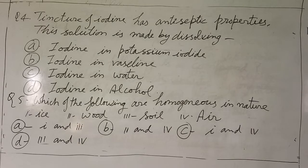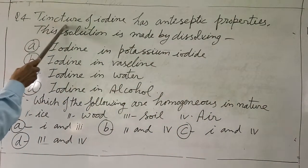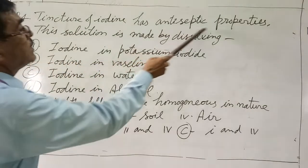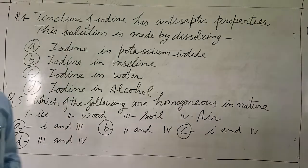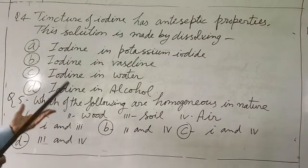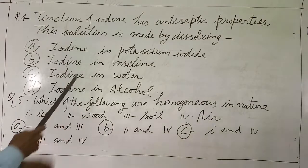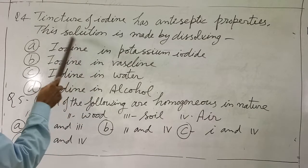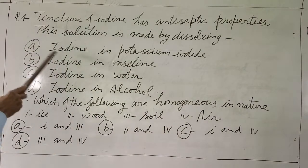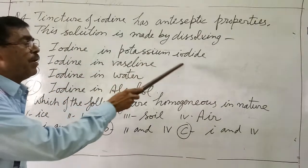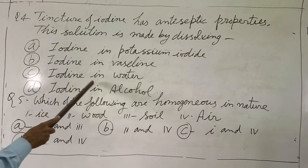Next question four. Tincture of iodine has antiseptic properties. This solution is made by dissolving iodine in potassium iodide solution.